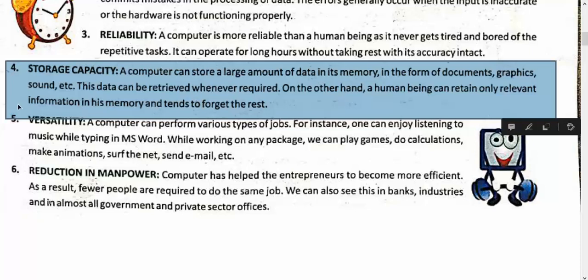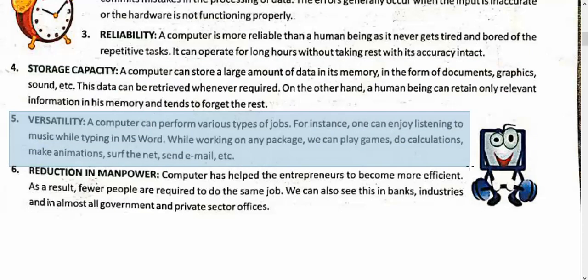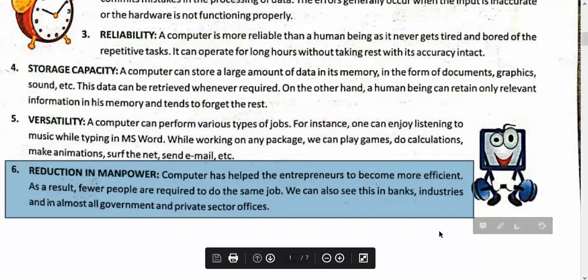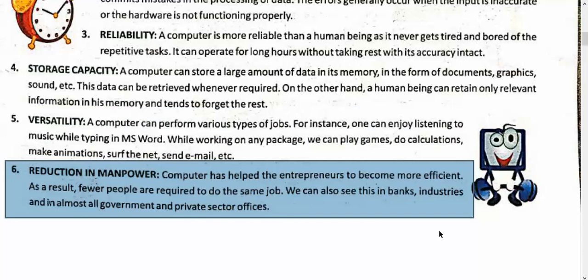Versatility — it can do many types of work. If you are told to study eight subjects instead of six, you start getting tired. But in a computer, you can listen to music, watch videos at the same time, do MS Word work, Excel work, play games, do calculations, animation, internet search — everything. This is called versatility. Human power has been reduced because it can do more accurate work in less time. Fewer people are required to do the same job — work that four people used to do is now done by one person with the help of a computer.